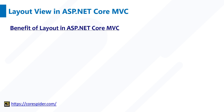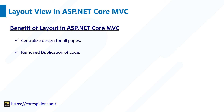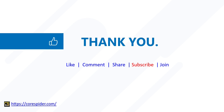Now let's discuss the benefits of layout view in ASP.NET Core MVC. First is centralized design for all pages — we created one layout page and used it in index, About Us, and Contact Us pages. There is also the facility to create multiple layout pages and set them according to the user's role. It removes duplication of code. Finally, it makes it easy to update static files — if you need to remove or rename a CSS or JS file, you can do it directly in the layout page without going through every individual page. I hope you now understand layout view in ASP.NET Core MVC. Do like and subscribe for more upcoming videos. Thanks for watching.